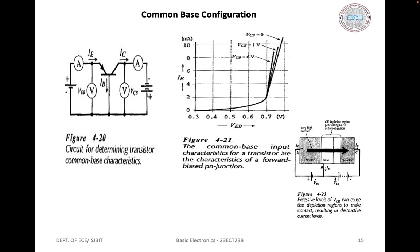Voltmeters and ammeters are included to measure the input and output voltages and currents. Resistor R1 is present to assist in controlling the emitter current. To investigate the common base input characteristics, the output voltage VCB is kept constant, and the input voltage VEB is set at several convenient levels. At each input voltage the corresponding input current IE is recorded, and IE versus VEB is plotted to give the common base input characteristics.